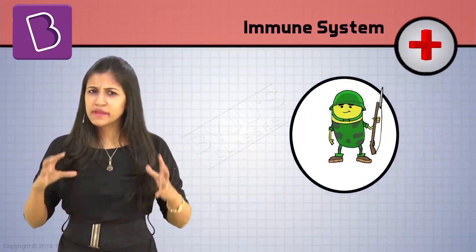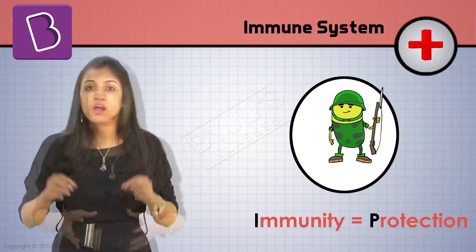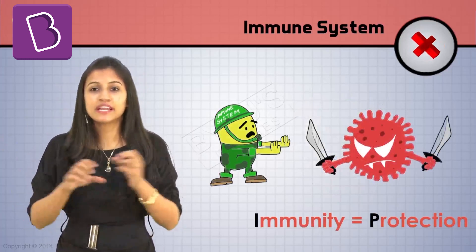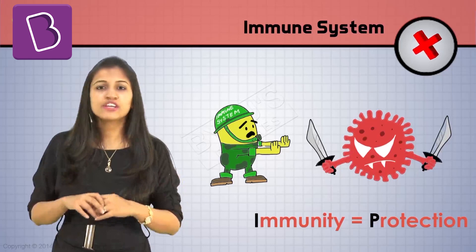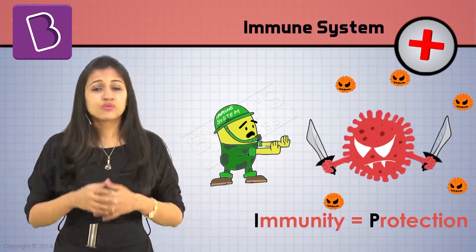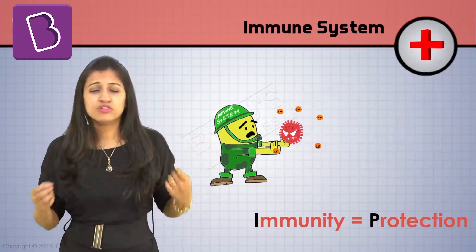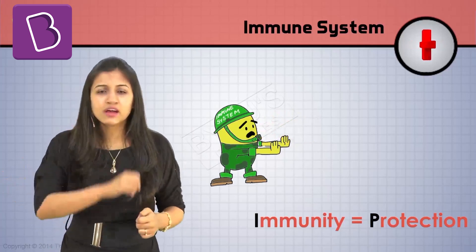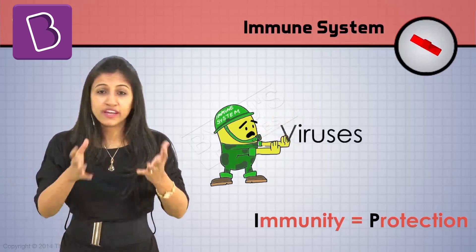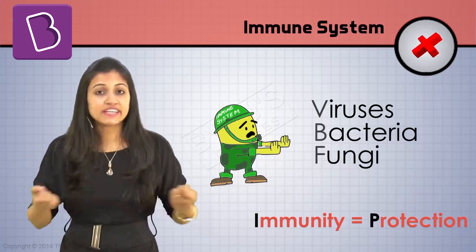Our immune system has many layers of immunity — by immunity, I mean protection. First, this little army tries to stop the invaders from getting inside you by creating a barrier. And if they don't succeed, because we've got to talk with our mouths open and breathe, when these little invaders manage to sneak in — maybe through our nose, maybe through our mouth — our little army sneaks up behind these bad guys, the viruses, the bacteria or fungi, and tries to break their neck completely in style.